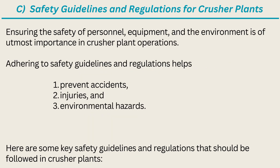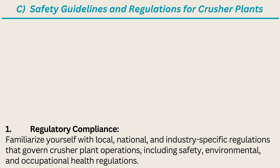Safety guidelines and regulations for crusher plants. Ensuring the safety of personnel, equipment, and the environment is of utmost importance in crusher plant operations. Adhering to safety guidelines and regulations helps prevent accidents, injuries, and environmental hazards. Here are some key safety guidelines and regulations that should be followed in crusher plants. 1. Regulatory compliance. Familiarize yourself with local, national, and industry-specific regulations that govern crusher plant operations, including safety, environmental, and occupational health regulations.